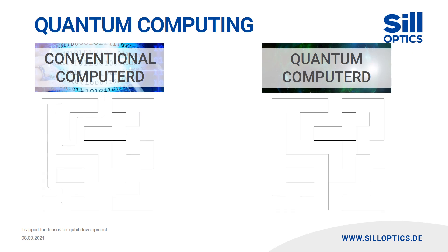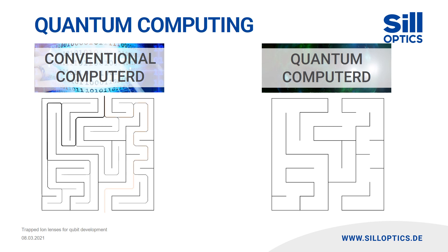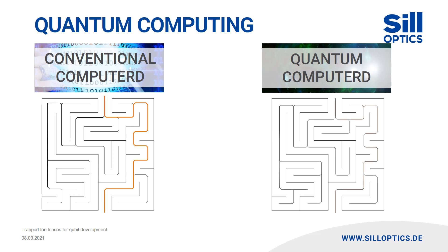The theoretical power of quantum computers is much higher than for conventional PCs. In the example, the path through a labyrinth has to be found. While the conventional computer checks each possible way, the quantum computer finds all paths at the same time and filters out the correct one.